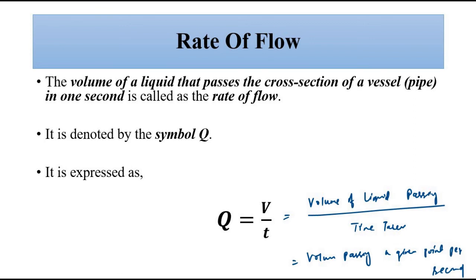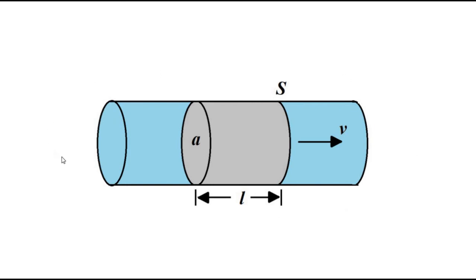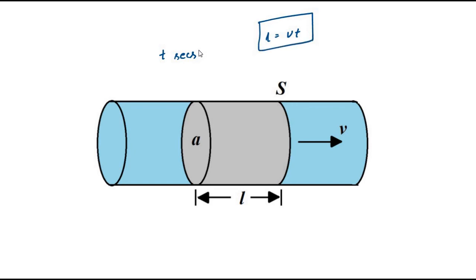Let us understand this with a pipe carrying a liquid. The cross-sectional area of the pipe is A and the liquid moves at velocity V. In time T seconds, moving with velocity V, it covers a length L, where L equals V×T — that is, distance equals velocity multiplied by time.